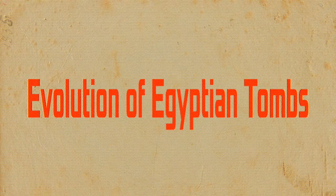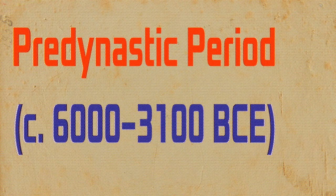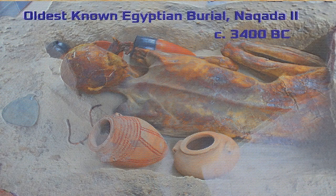Welcome to a fascinating journey through the evolution of Egyptian tomb architecture. Our story begins in the pre-dynastic period, around 6000 BCE, where simple pit graves were the norm for burying the dead. These early burials reflect the spiritual beliefs and cultural practices of Egypt's earliest inhabitants.